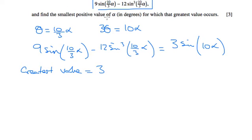And it says find the smallest possible positive value of alpha for which that occurs. So when is a sine graph at its peak?